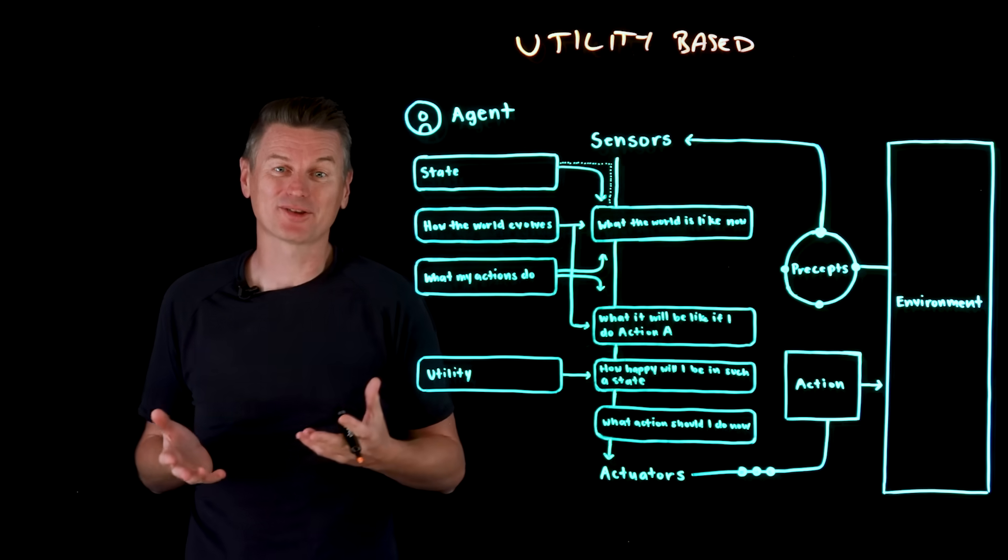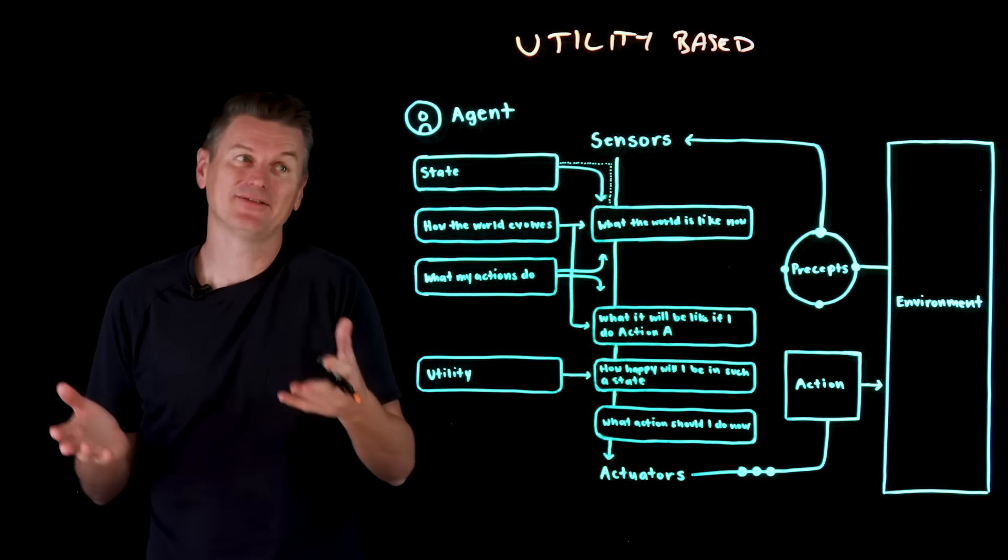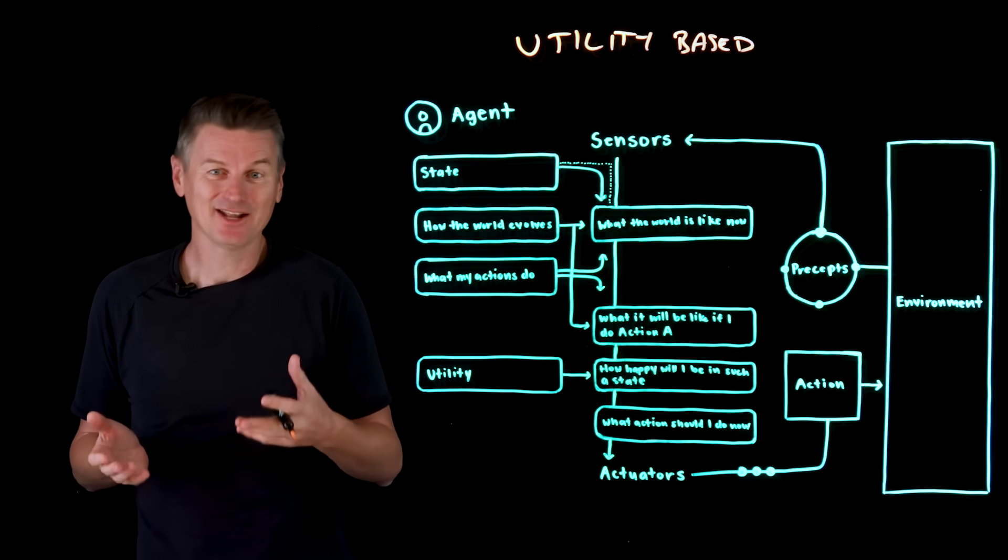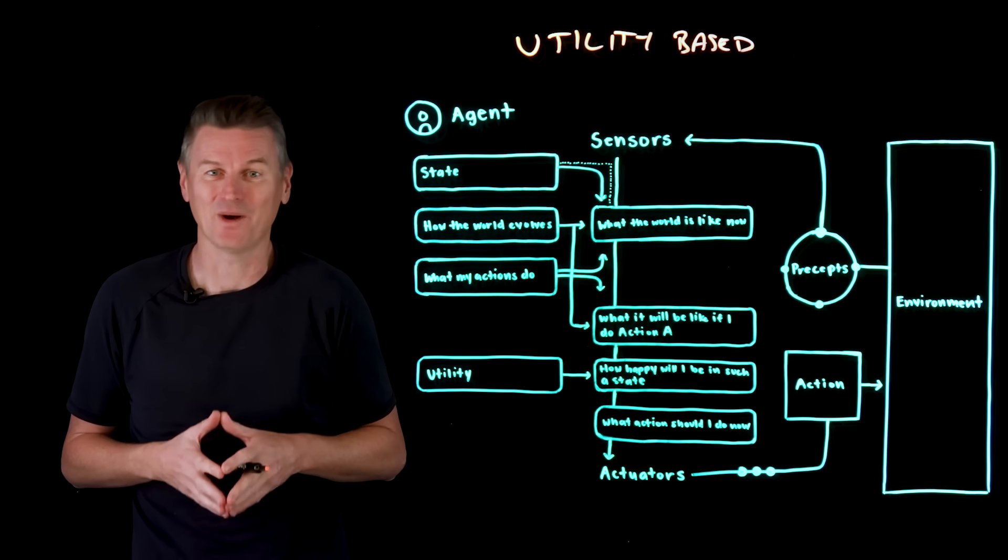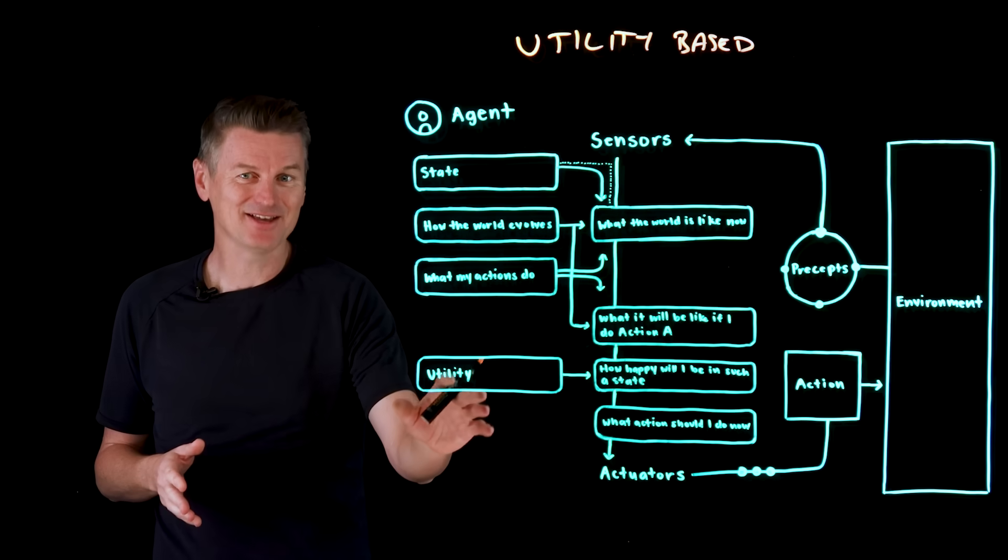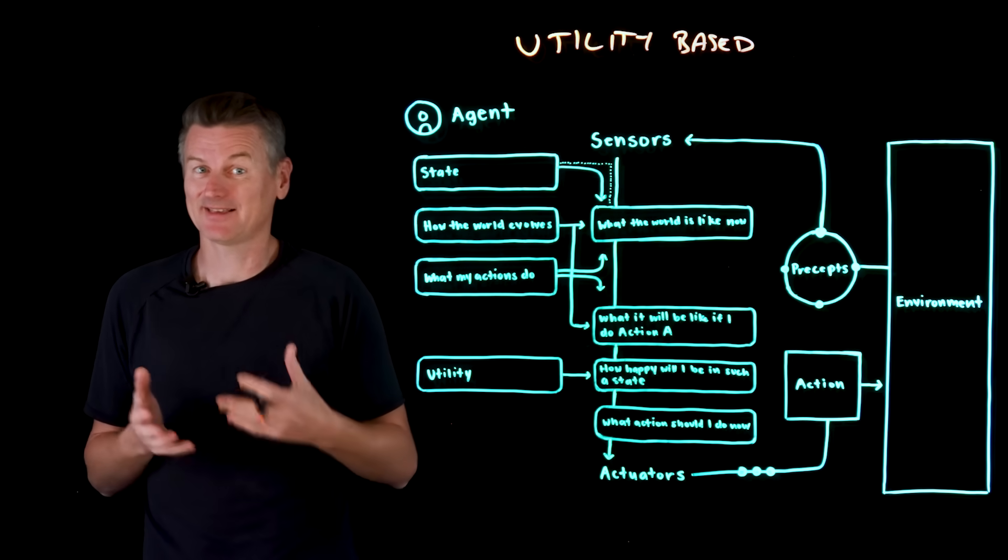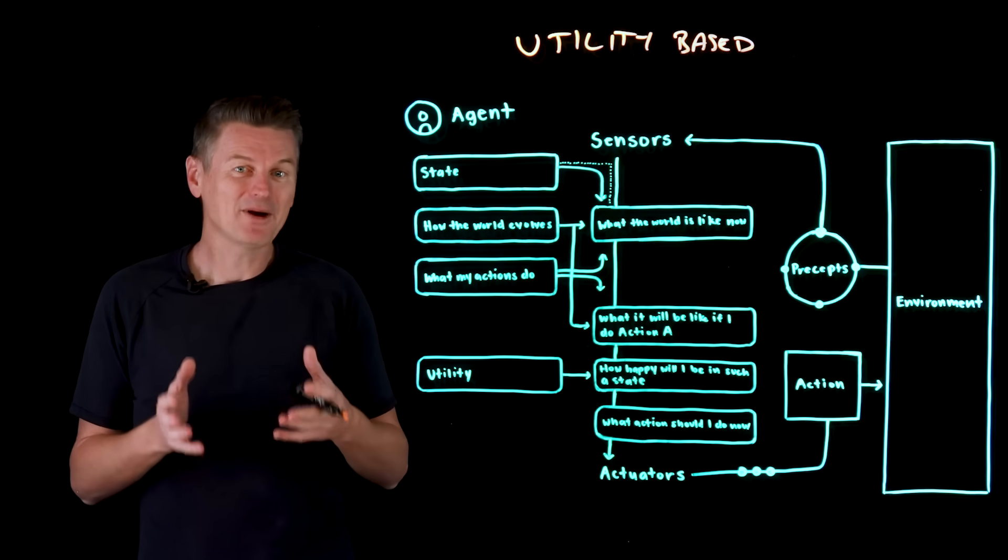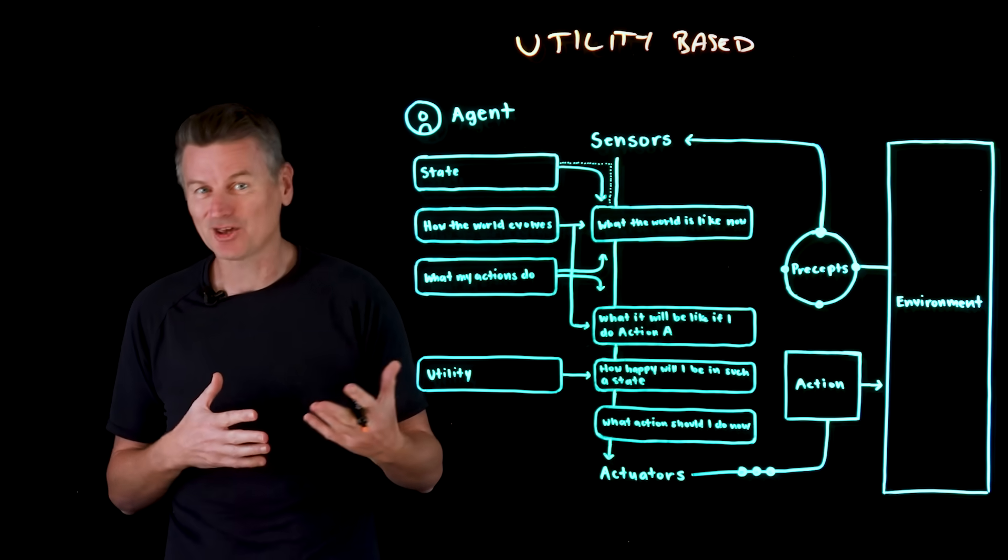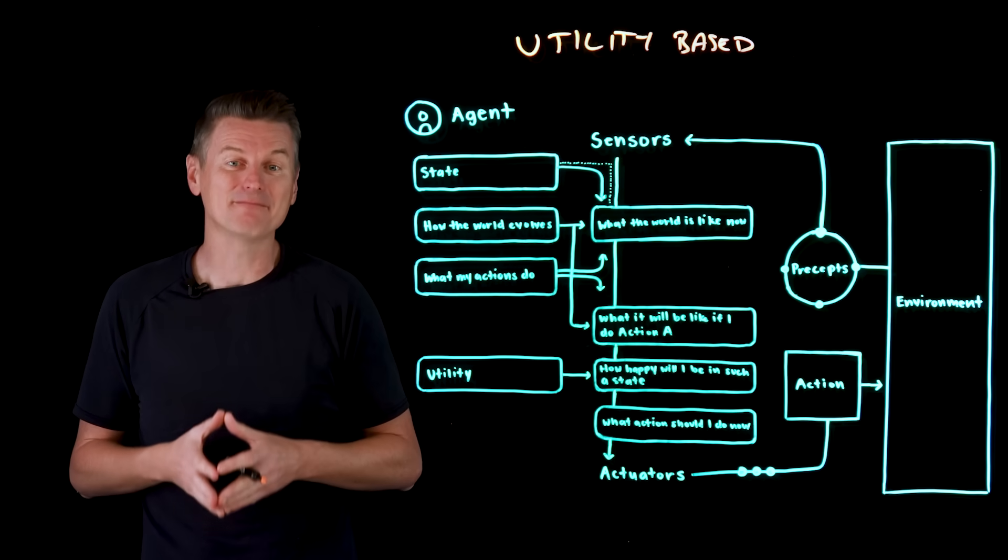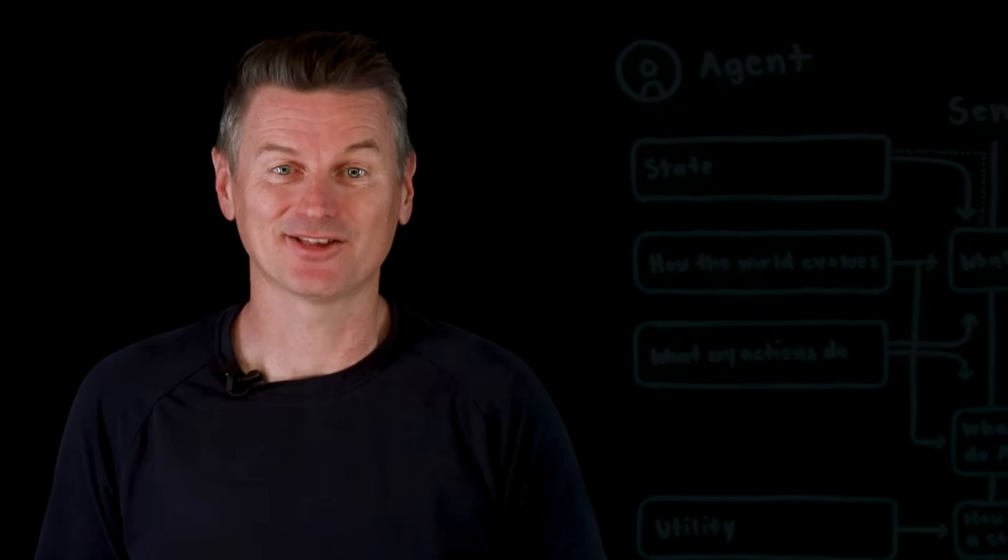So consider an autonomous drone delivery. The goal-based version might use a goal of deliver the package to address X and it chooses an action that completes that goal. Doesn't matter if it gives you a bumpy energy wasting route. But a utility-based version might instead be something like deliver the package quickly and safely and with minimum energy usage, where the drone simulates multiple paths, it estimates things like duration and battery level and weather, and it picks the route that maximizes its utility score. That's AI agent number four.